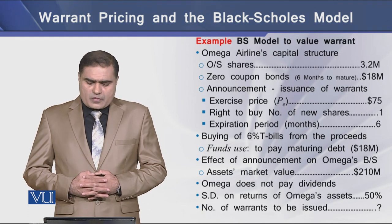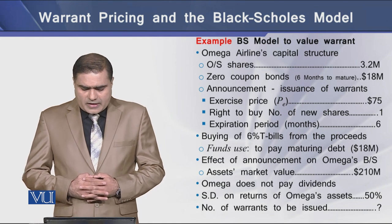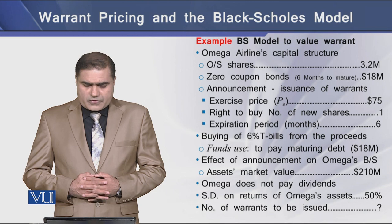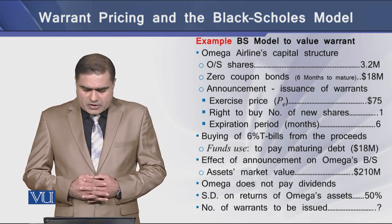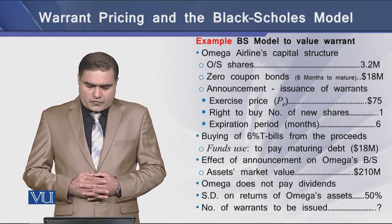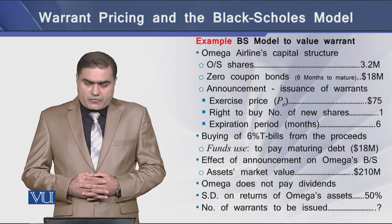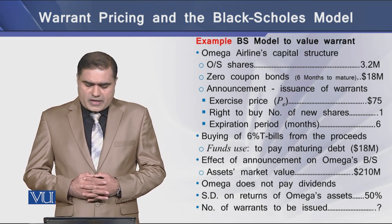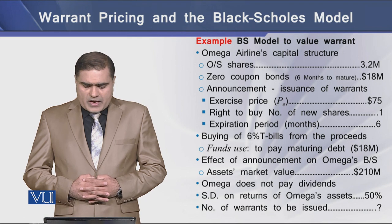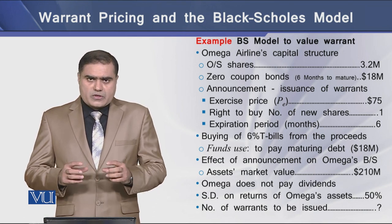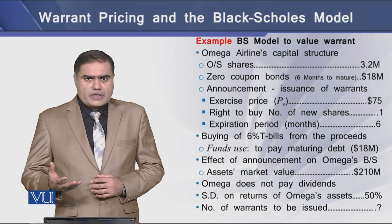Now let's see an example of how the BS model works for pricing a warrant. We have a company named Omega Airlines whose capital structure is composed of 3.2 million outstanding shares and $18 million of zero-coupon bonds with 6 months to maturity. The firm is announcing the issuance of warrants with an exercise price of $75 each, with the right to buy one new share against one existing share, and an expiration date of 6 months. If 6% T-bills are purchased from the proceeds, the funds can be used to pay the existing debt of $18 million.